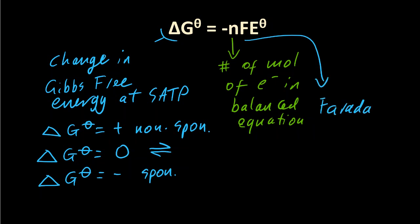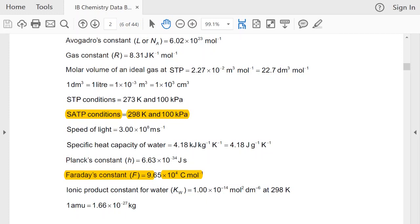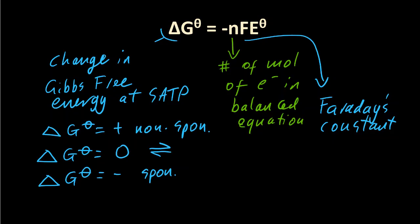F is Faraday's constant, and that is in the data booklet, as is the conditions for SATP. And finally, that's the standard electrode potential of the cell, which normal people would call the voltage.